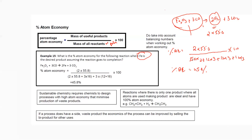For percentage atom economy, we don't need any experimental or theoretical data — we only need the equation. We check the mass of the desired product from the equation, divide by the total mass of reactants or products, and multiply by 100.